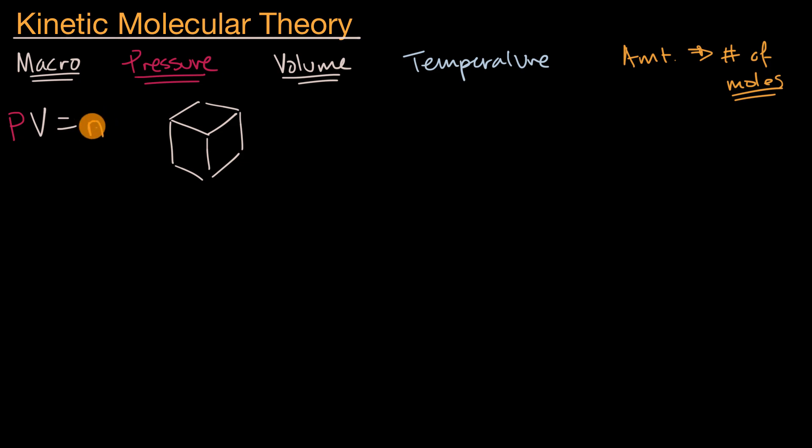But the amount we have measures number of moles. You have your ideal gas constant. That just helps us make all the units work out depending on our units for everything else. And then you have your temperature measured in Kelvin.